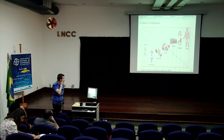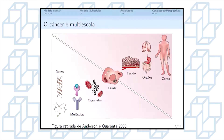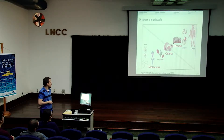O câncer é um fenômeno multi-escala, de modo que cada escala interage com outra de modo simultâneo. Essa interação entre as escalas proporciona o crescimento tumoral. Nós desenvolvemos um modelo que trata três escalas em específico: a escala molecular, celular e tecidual.